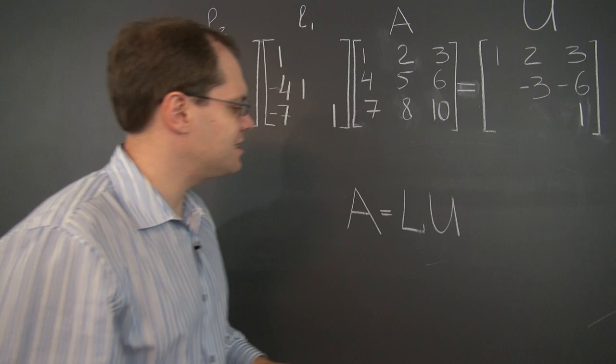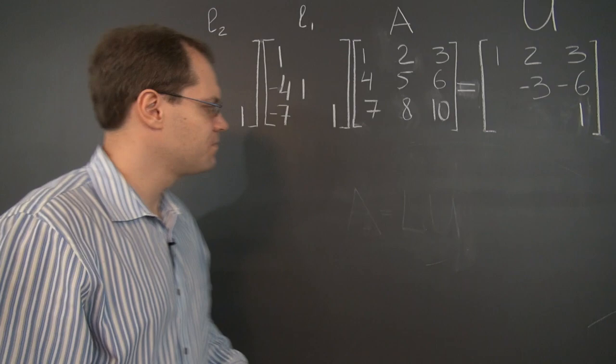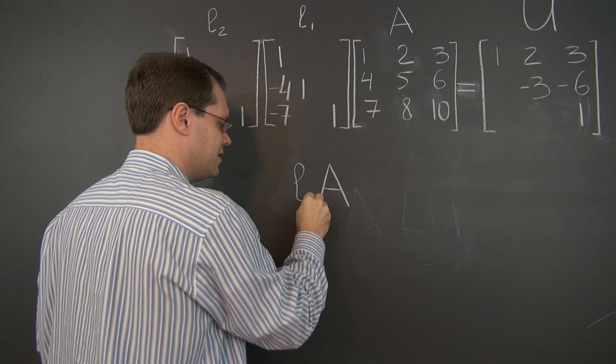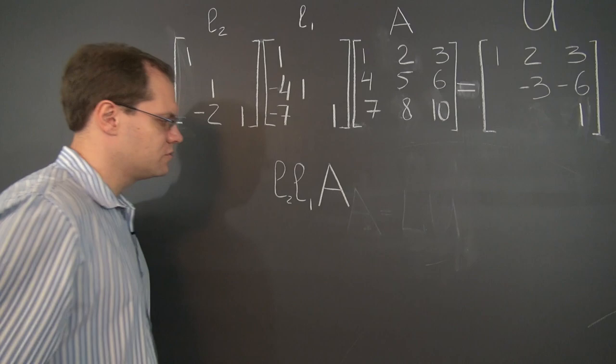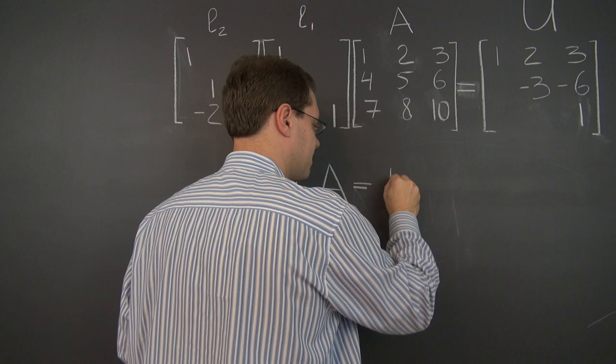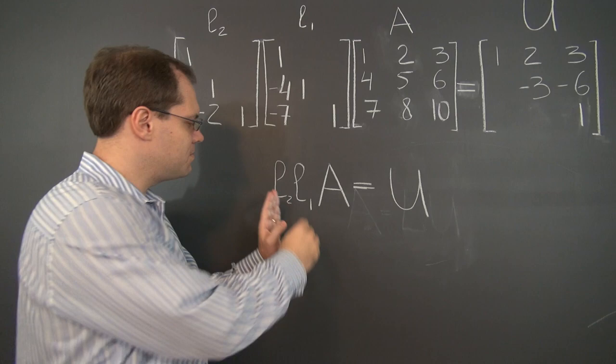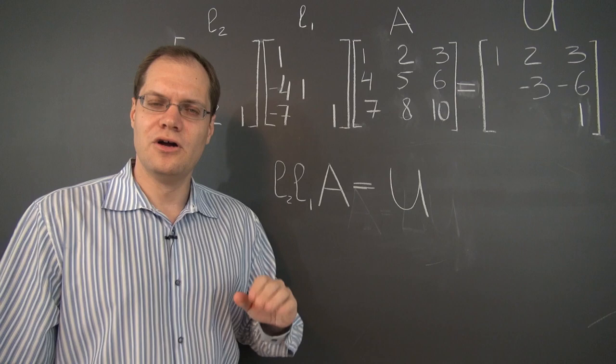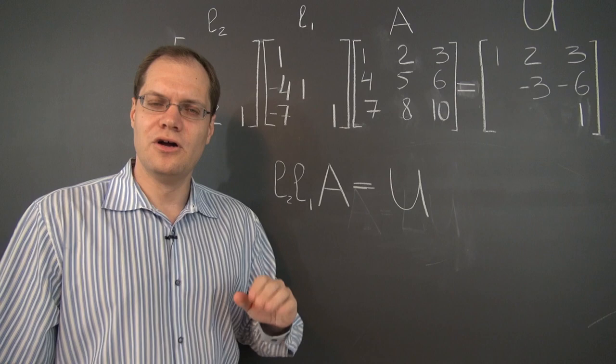Here is the identity that we now have: A pre-multiplied by L1, and then pre-multiplied by L2, equals U. Remember that the product of two lower triangular matrices — even if it's more lower triangular matrices — will still be a lower triangular matrix. The product of any number of lower triangular matrices is a lower triangular matrix. So this product is a lower triangular matrix.